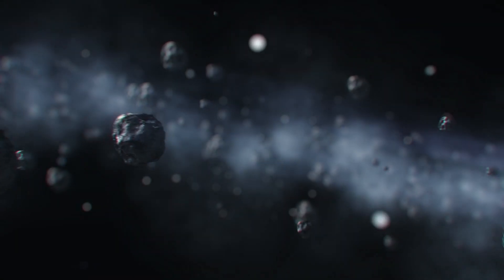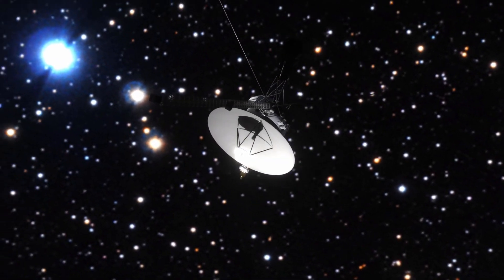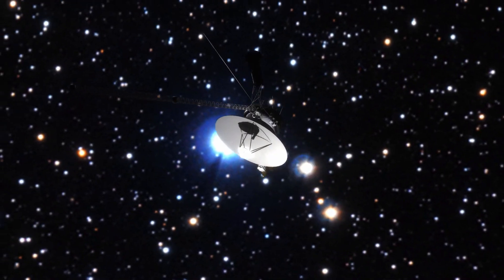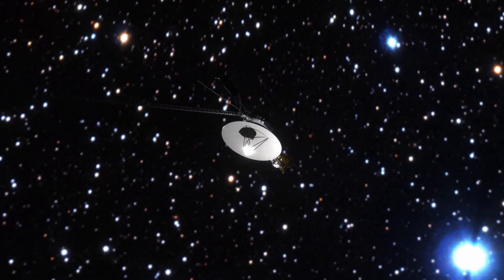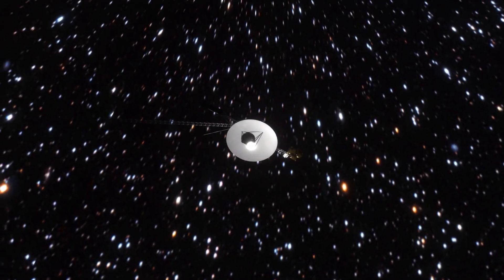Before the launch of the Voyagers, the nature of the Heliosphere was one of the biggest questions in astronomy. Astronomers didn't even know how big it was, and some even estimated that Heliopause might be located as close as the orbit of Jupiter.